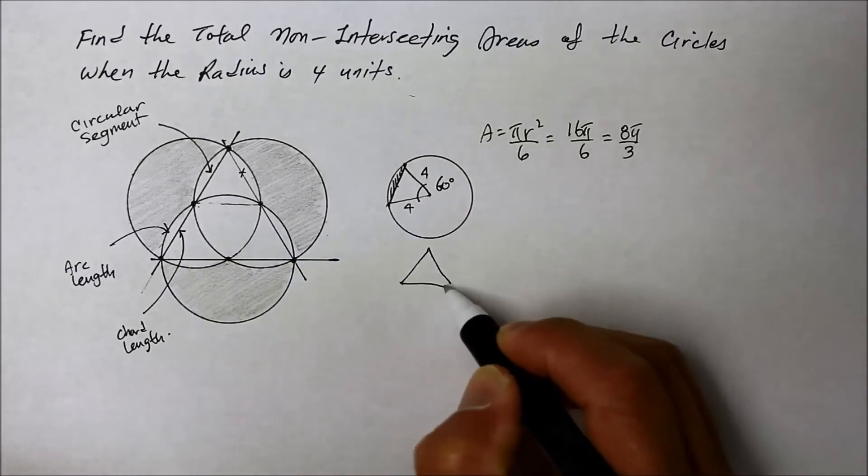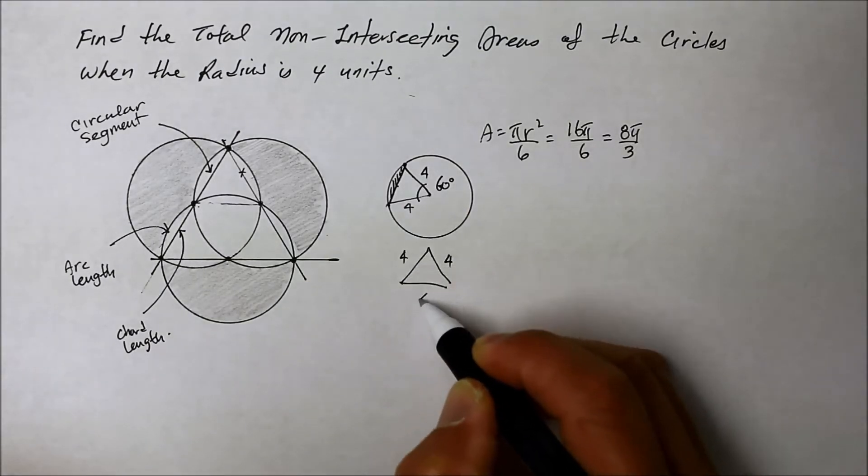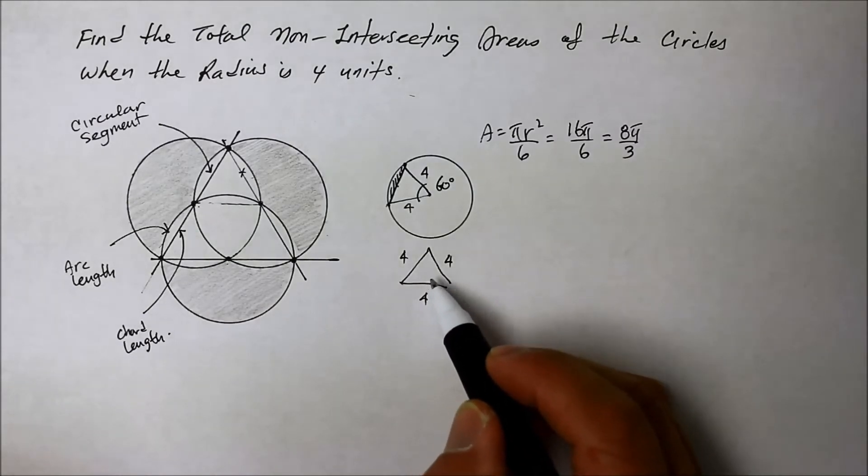Because, after all, it is an equilateral triangle. How do you find the area of that equilateral triangle?